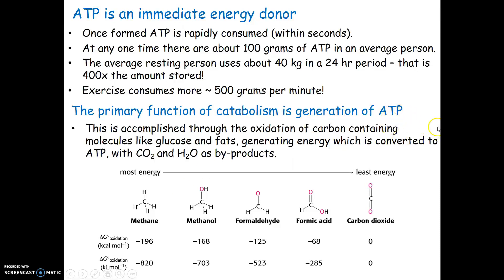So how do we get our ATP? It's through a combination of oxidation reactions. This is where we utilize that combustion reaction: carbohydrate plus oxygen yields CO2, water, and energy. The energy formed for metabolism is ATP.